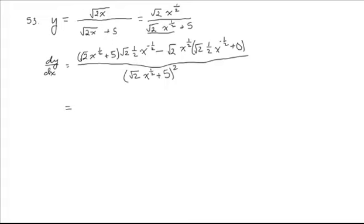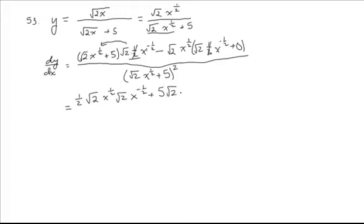Now there's going to be some simplifying we can do, and it's going to come from doing a little bit of distributing. One of the things we can do here is I see the 1 half in both of these — I'm going to pull the 1 half out front in the numerator to make things a little bit easier to work with, so I don't have to worry about the 1 half when I distribute. When I distribute, I'm going to have square root of 2 times x to the 1 half, then multiply it by square root of 2 times x to the minus 1 half, and also multiplied by the 5: 5 times square root of 2 times x to the minus 1 half. Then we've got minus square root of 2 times x to the 1 half, times square root of 2 times x to the minus 1 half.